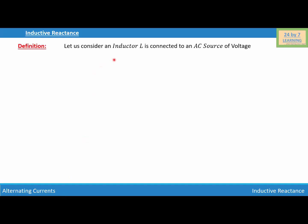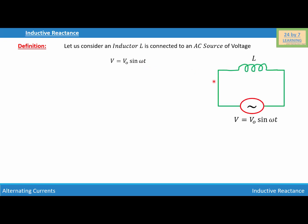Inductive reactance. Let us consider an inductor L connected to an AC source of voltage V equal to V₀ sin(ωt). In order to explain the inductive reactance, I'm going to use this information to draw a figure for an AC circuit. The figure shows inductor L connected to an AC source of voltage V equal to V₀ sin(ωt).